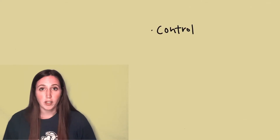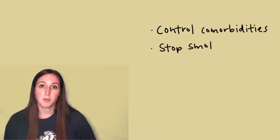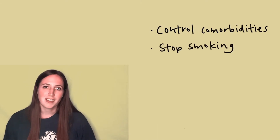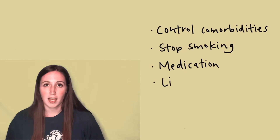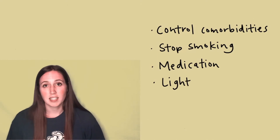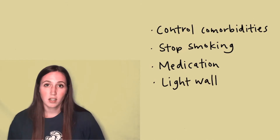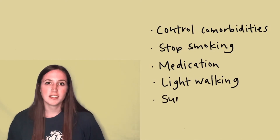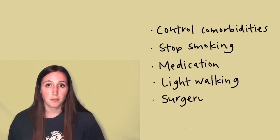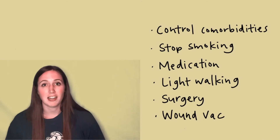Treatment includes first controlling comorbidities like diabetes or hypertension, and stopping them from smoking. You want to make sure that these patients are medicated properly for their conditions. Light walking for longer periods of time, up to about a five or six out of ten on the pain scale, is really good for helping to revascularize these areas, if the patient is able. Otherwise, surgeries to help revascularize the area might help, as well as wound vacs to try to draw some of that blood into the area.